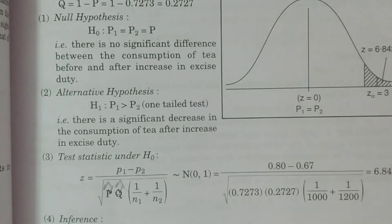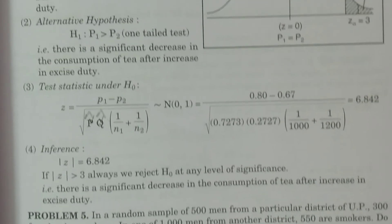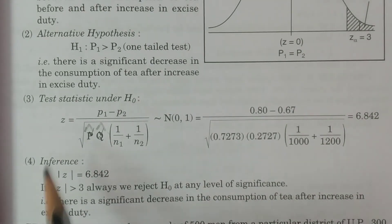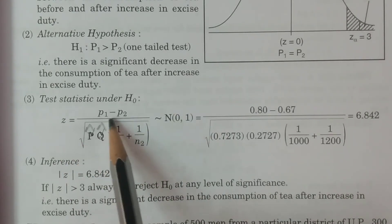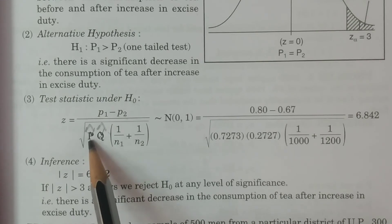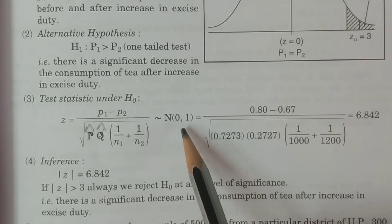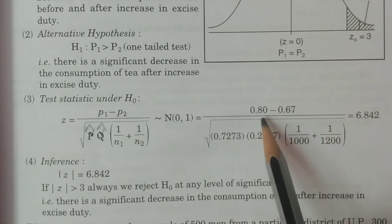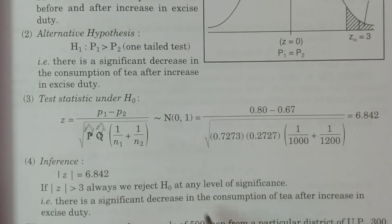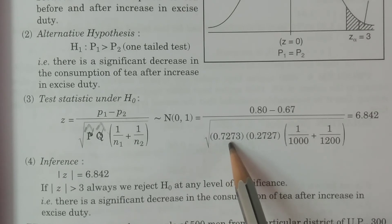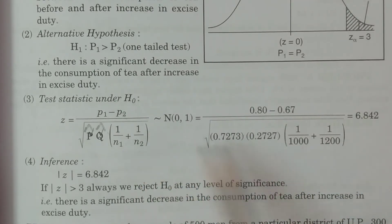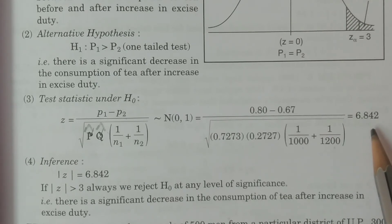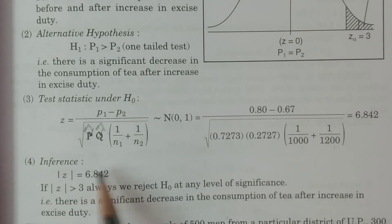The test statistic under H0 is case 2 (capital P not known): z = (p1 − p2) / sqrt(p-crown × q-crown × (1/n1 + 1/n2)). Substituting values: z = (0.80 − 0.67) / sqrt(0.7273 × 0.2727 × (1/1000 + 1/1200)) = 6.842.